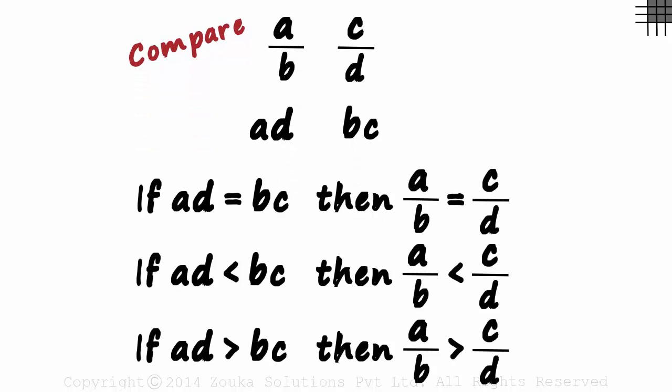These are the three simple rules. If these two products are equal, then the fractions are equal. If AD is less than BC, then A by B will be smaller than C by D. And if AD is greater than BC, then A by B will also be greater than C by D. This makes it really simple.